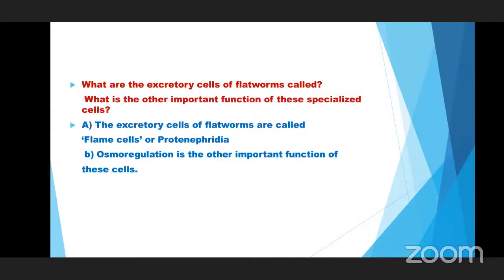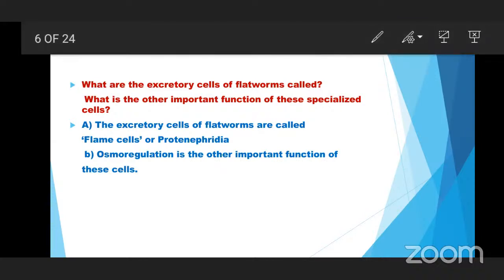Fourth question: What are the excretory cells of flatworms called, and what is the other important function of these specialized cells? Flatworms belong to the phylum Platyhelminthes. The excretory organs of the flatworms are called flame cells — protonephridia. Proto means the primitive one. Flame cells produce excretory material in the flatworms.